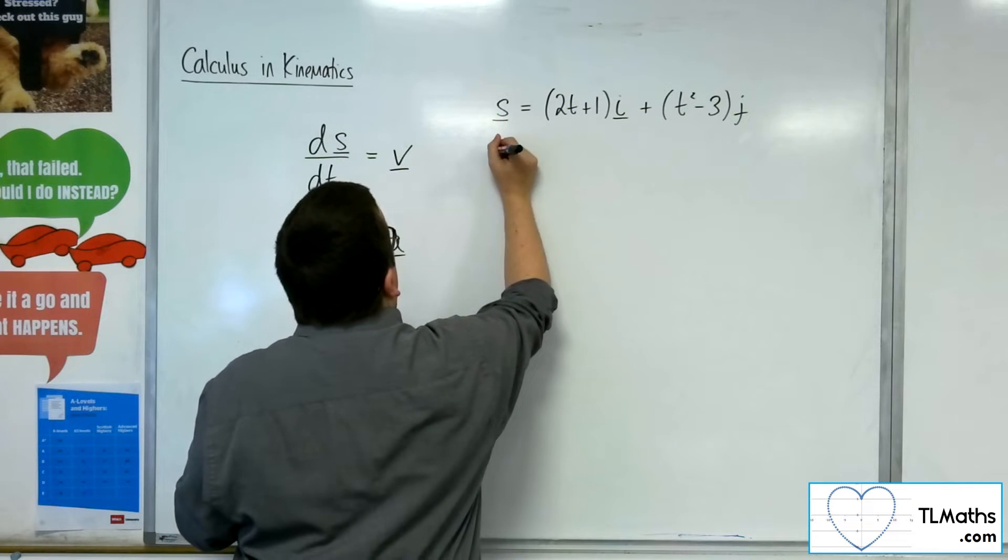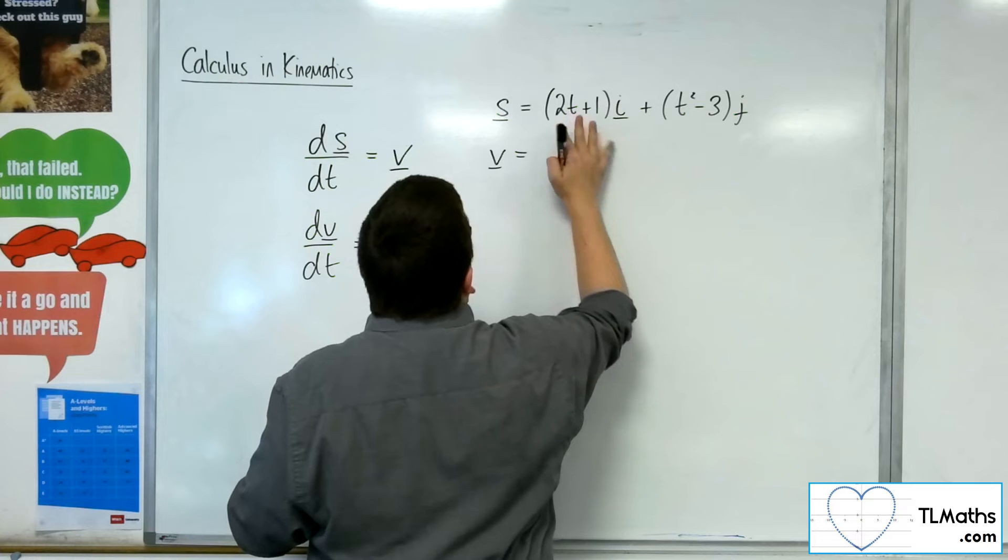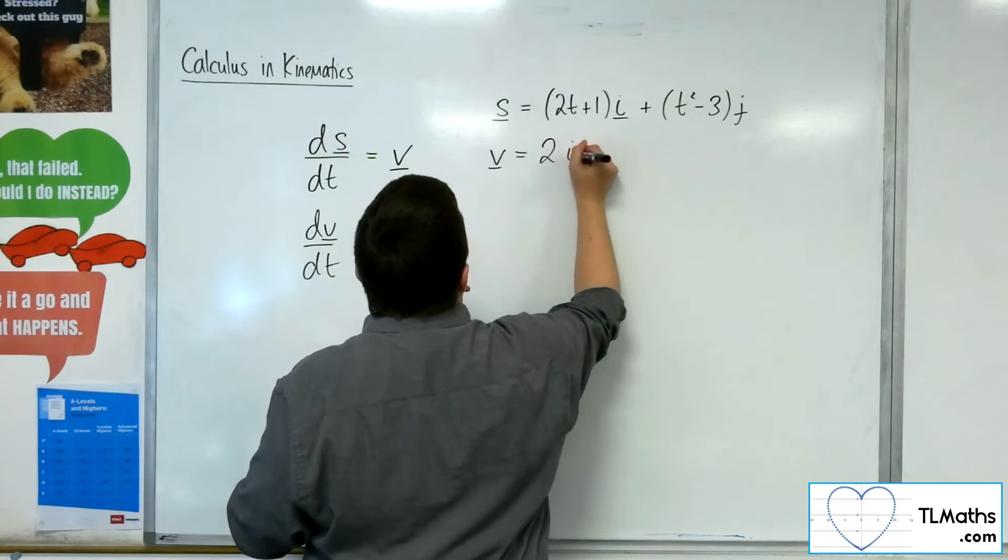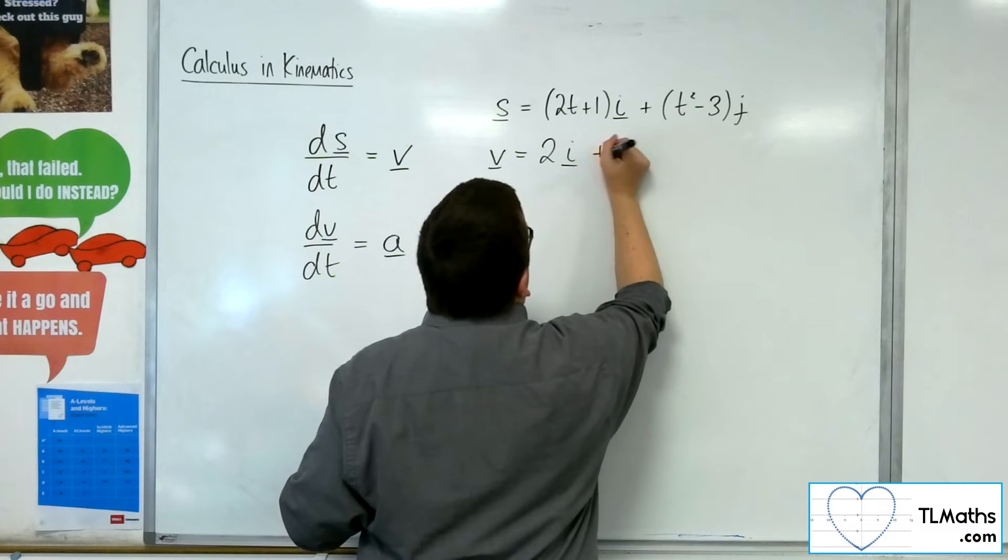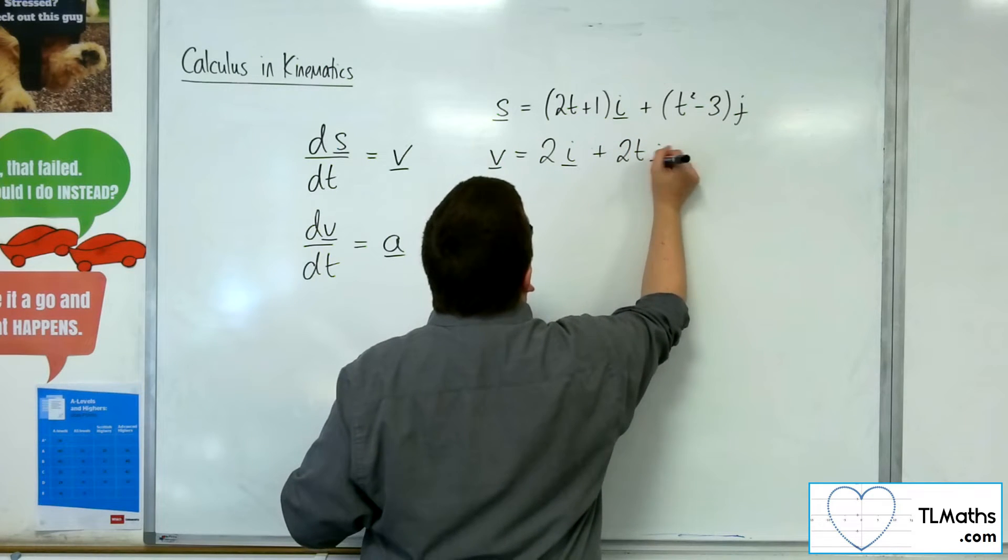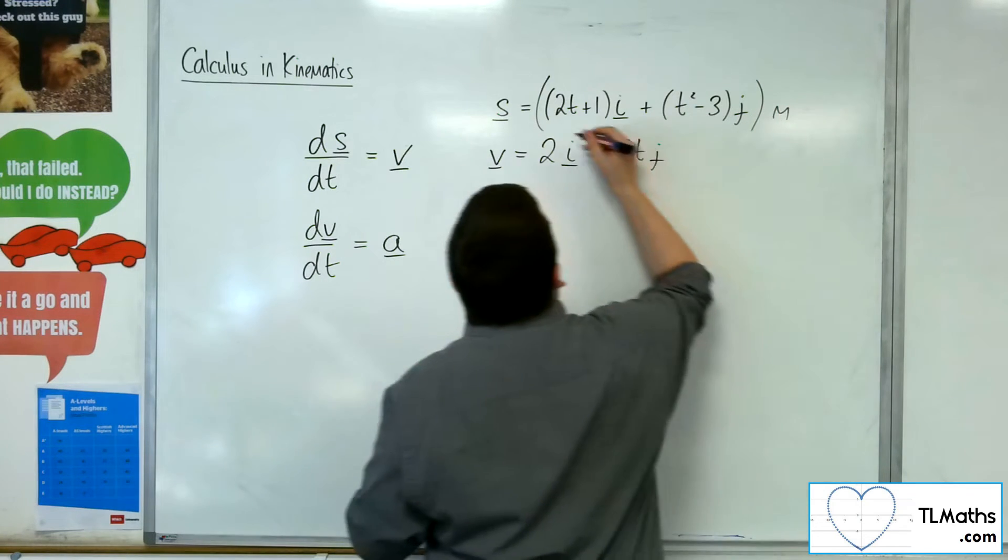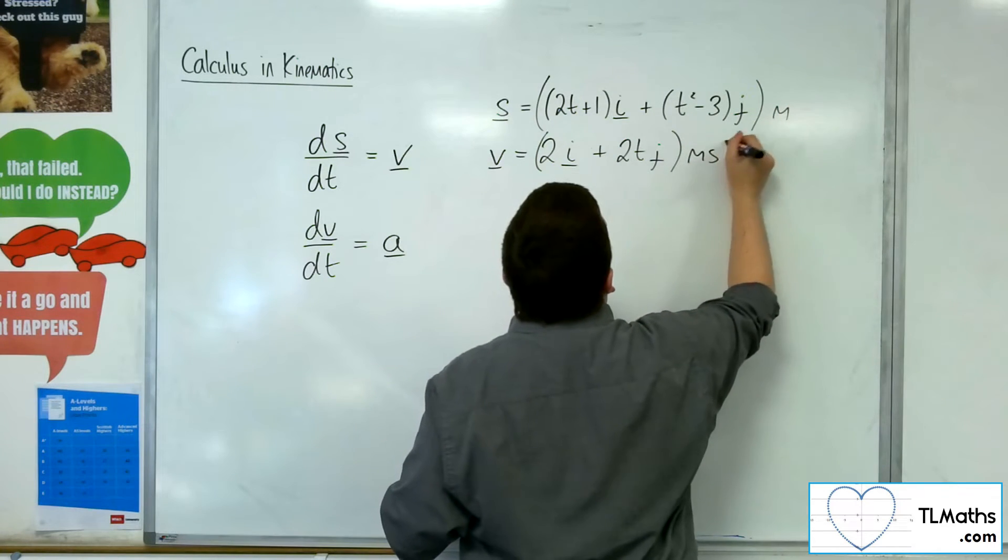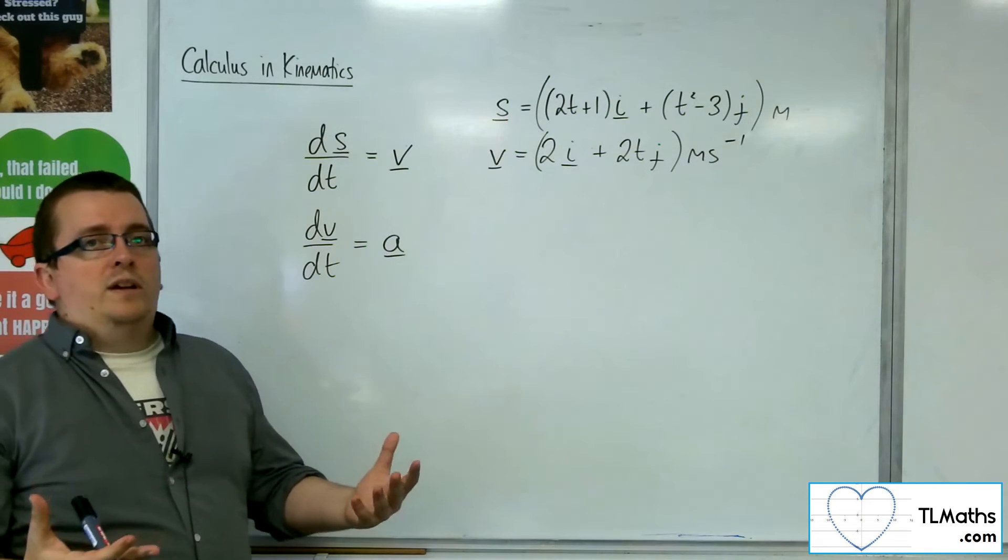So that's 2i, and t² - 3 would differentiate to 2t, and that would be j. So this would be meters, and this would be meters per second. That's how we're going to go about that.